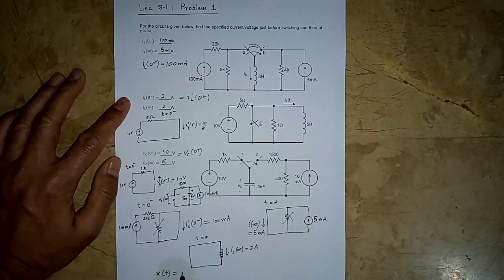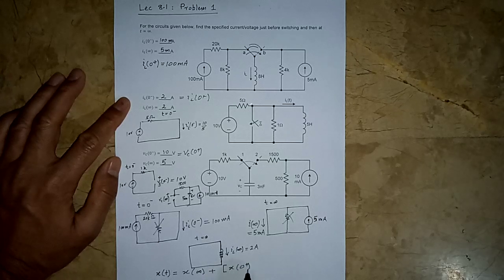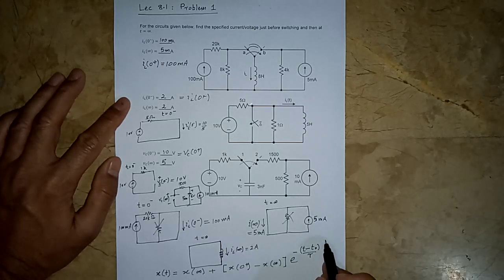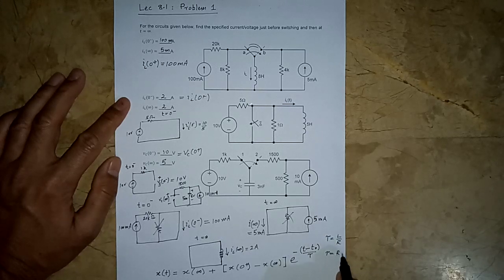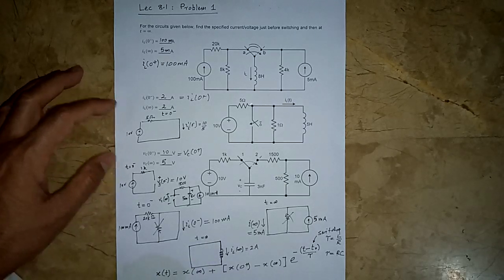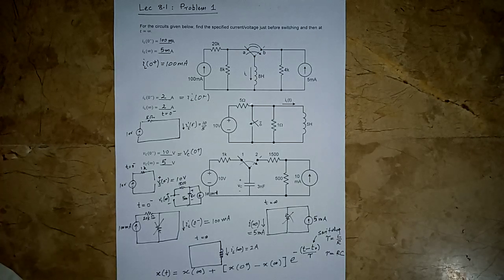The general solution is: x(t) = x(∞) + [x(0+) − x(∞)] · e^(−(t − t₀)/τ), where t₀ is the switching time and τ is the time constant. For RL circuits, τ = L/R; for RC circuits, τ = RC. Since switching occurs at t equals zero, t₀ equals zero. Once we have the initial value, the final value, and τ, the complete solution follows directly — that is why we focus on finding these values first.